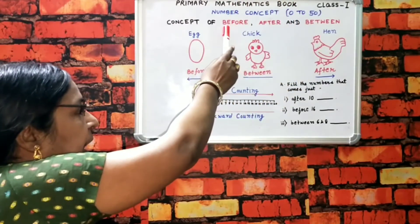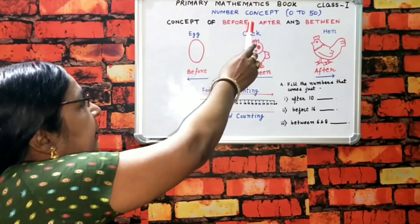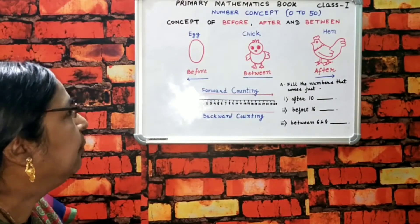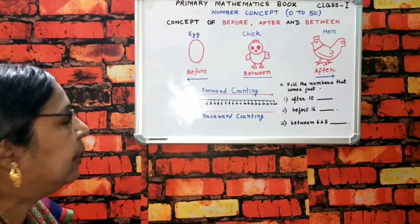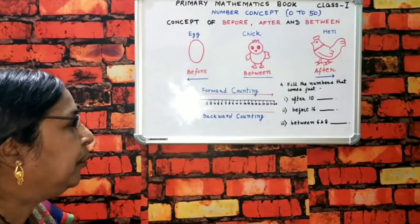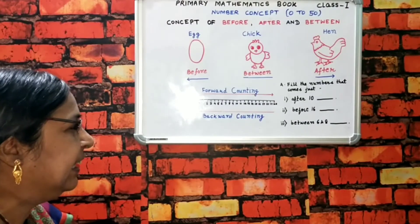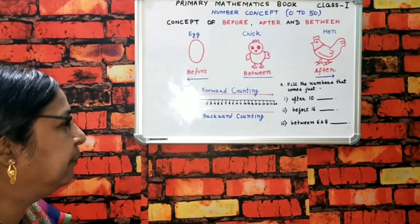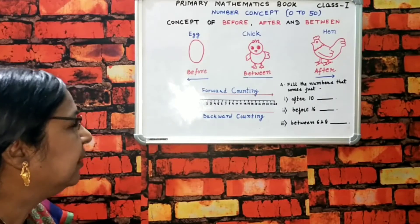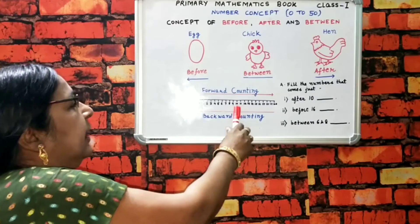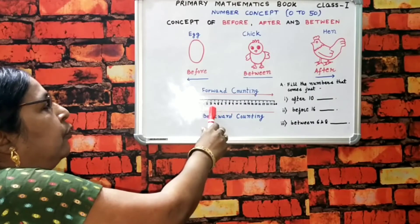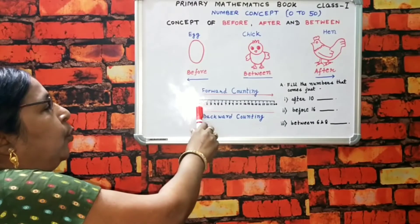Jab hum log Before ki baat karte hain, to hum log backward counting ki taraf jaate hain. Backward counting mein: 20, 19, 18, 17, 16, 15, 14, 13, 12, 11, 10, 9, 8, 7, 6, 5, 4, 3, 2, 1.